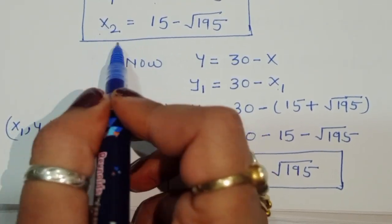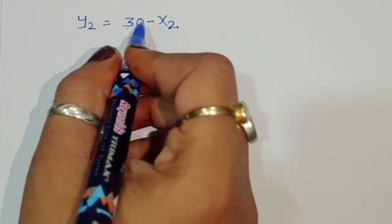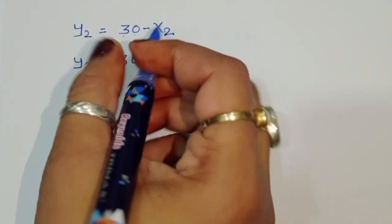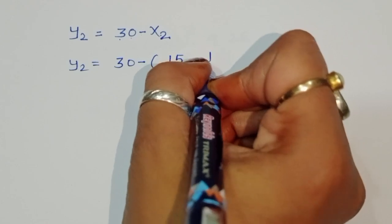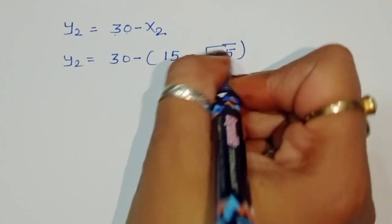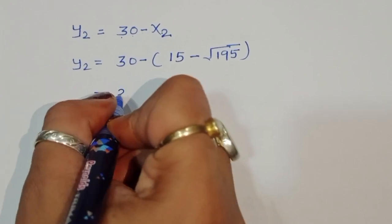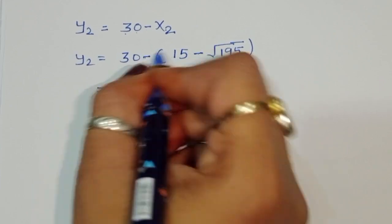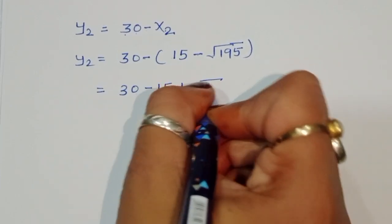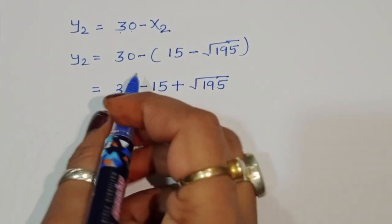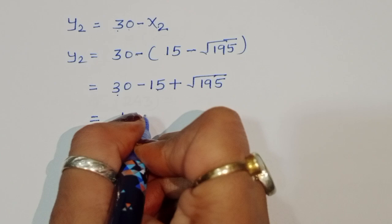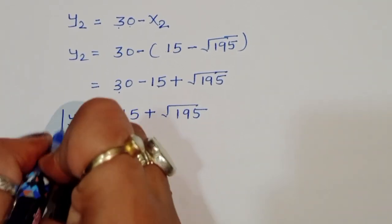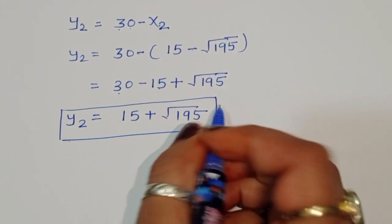Now for y2: y2 equals 30 minus x2. The value of x2 is 15 minus square root of 195. So y2 equals 30 minus 15 plus square root of 195, which gives y2 equals 15 plus square root of 195. So x2 y2 gives the pair: x2 equals 15 minus square root of 195, y2 equals 15 plus square root of 195.